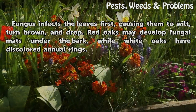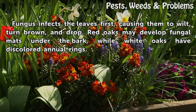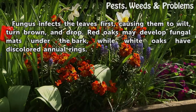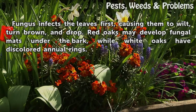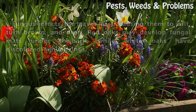The fungus infects the leaves first, causing them to wilt, turn brown, and drop. Red oaks may develop fungal mats under the bark, while white oaks have discolored annual rings.